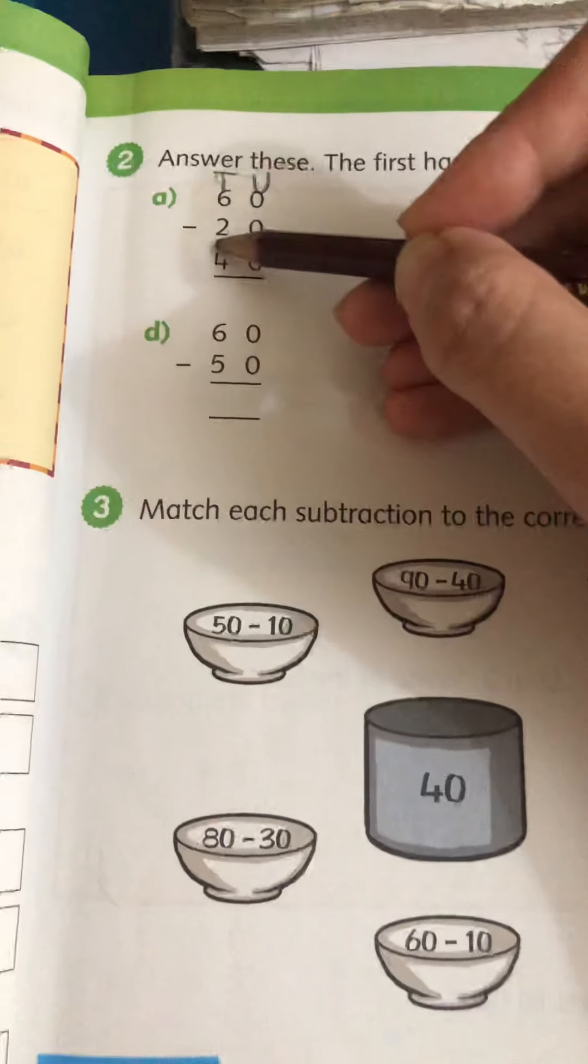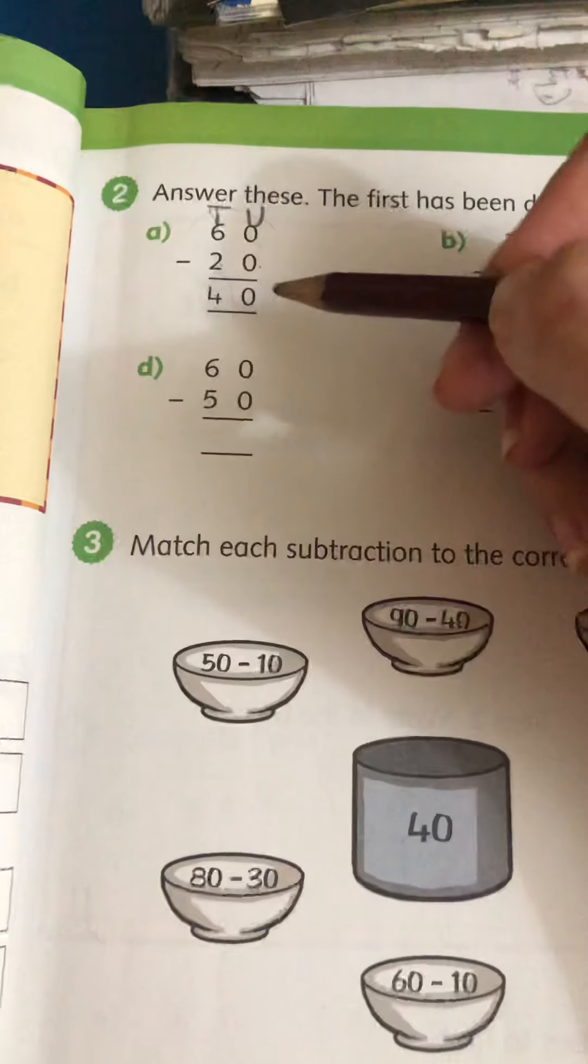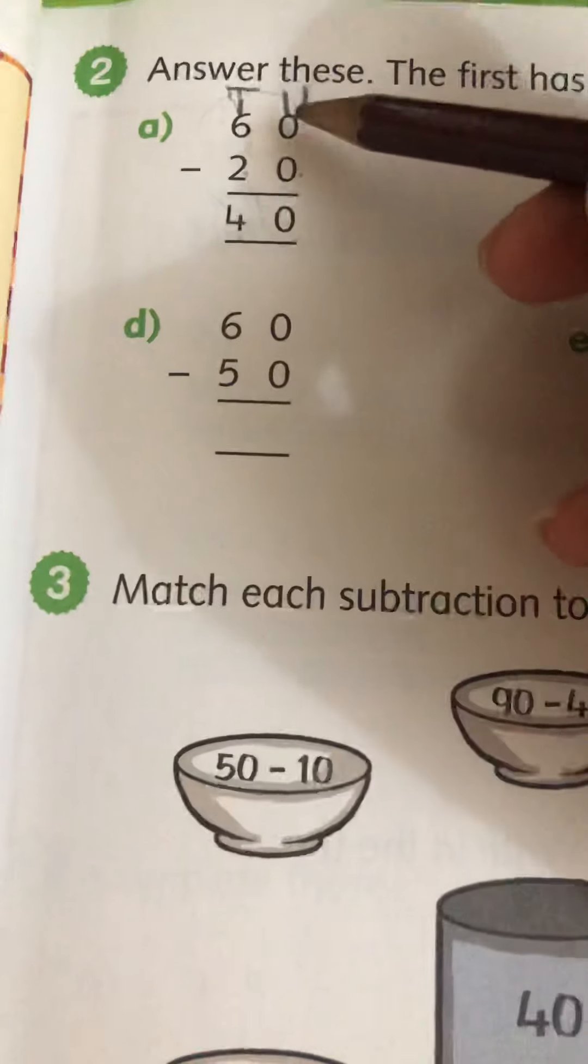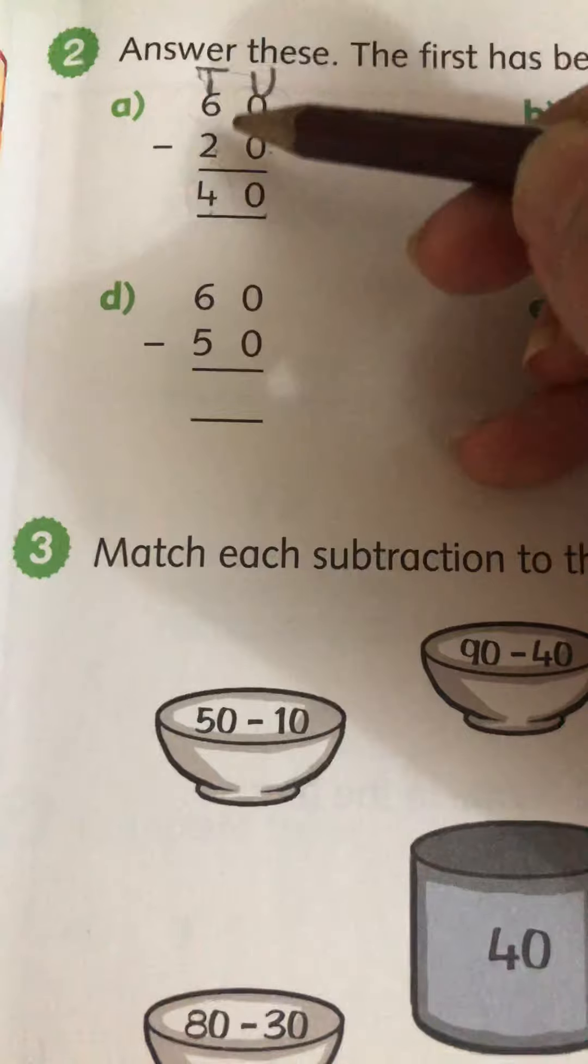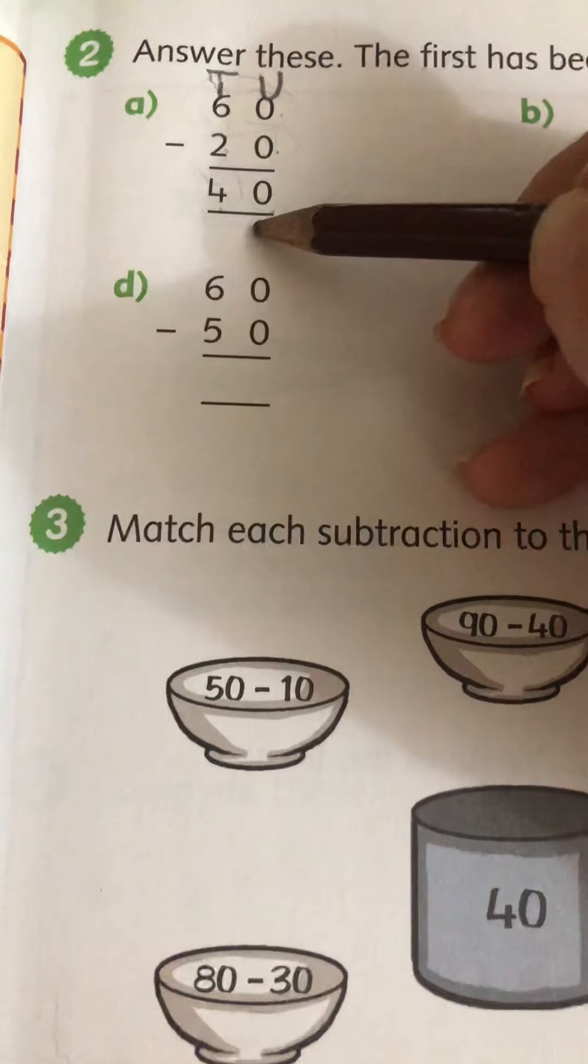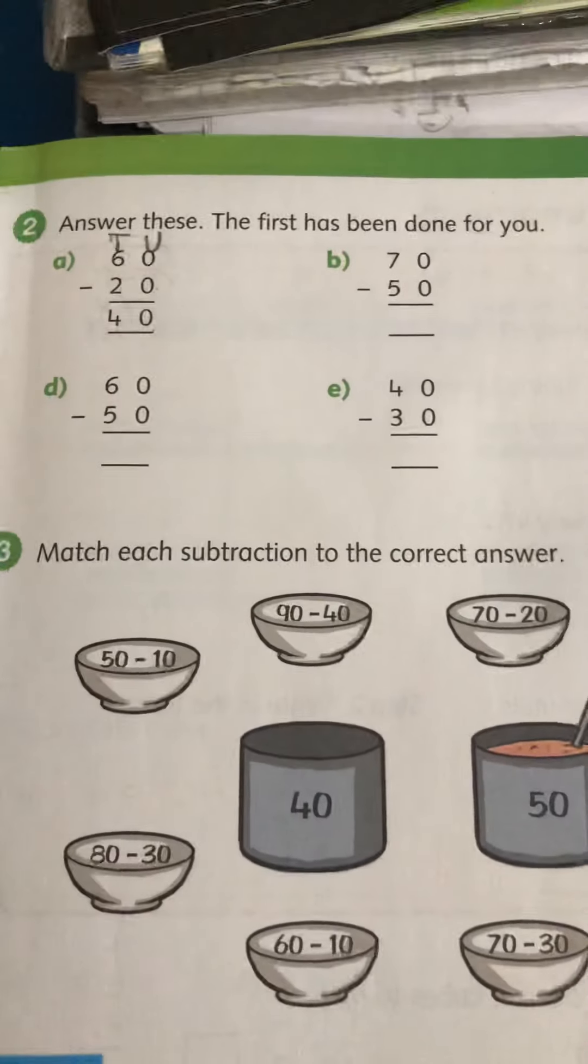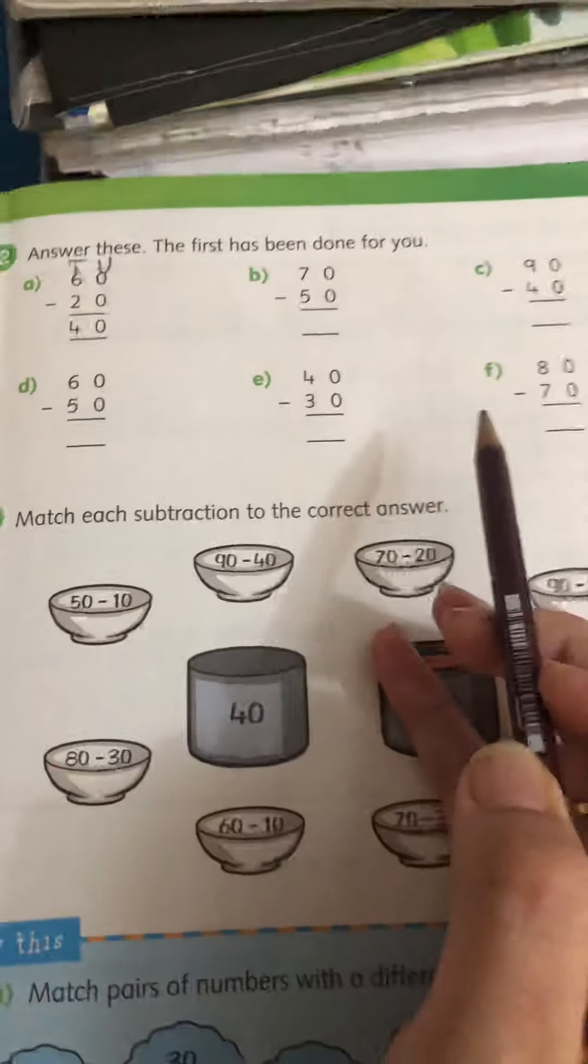The answer is 4. And we can read it like this as well. 60 take away 20, the answer is 40. The same way you have to do the rest of the questions.